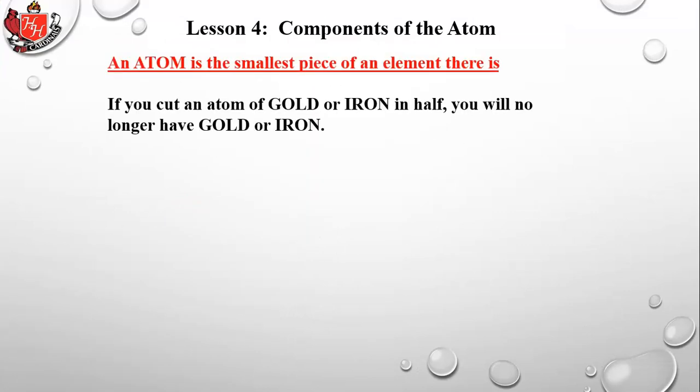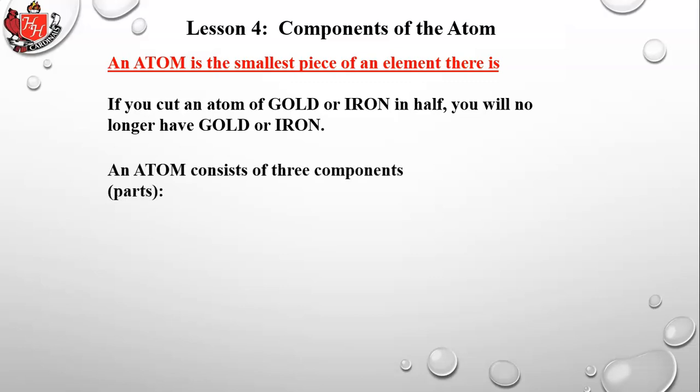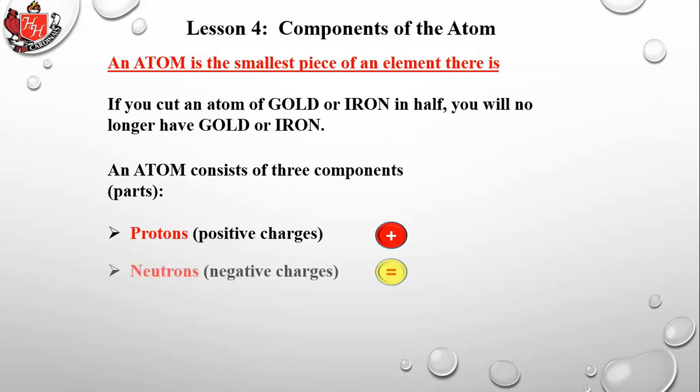An atom is the smallest piece of an element. If you cut an atom of gold or iron in half, you will no longer have gold or iron. An atom consists of three parts: protons, which are positively charged; neutrons, which have no charge; and electrons, which are negatively charged.